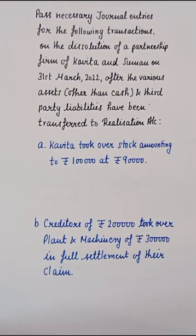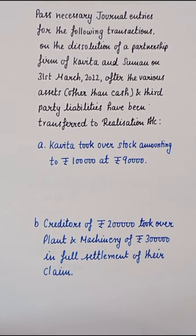Pass necessary journal entries for the following transactions on the dissolution of partnership firm of Kavitha & Suman on 31st March 2022, after the various assets other than cash and third party liabilities have been transferred to Realization Account. इन्होंने अपना firm dissolve किया है और various assets other than cash और third party liabilities को पहले ही Realization Account में डालके close कर दिया है। आपको उससे आगे की transactions के लिए journal entry बनानी है।